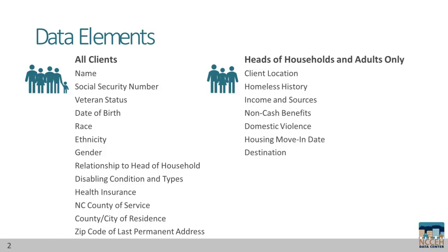We've divided them into two groups based on which clients in any household need these data elements. The first column of elements are for all clients, including children in households. The second column are elements that are only needed for heads of households and other adults in the household. All together, these are the elements that our Intro to HMIS Data Standards Training will review.